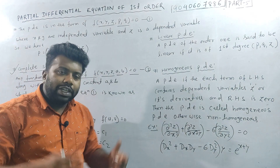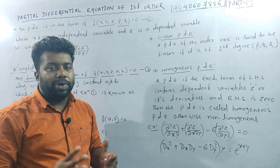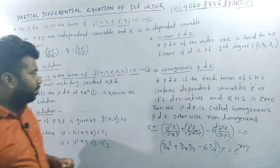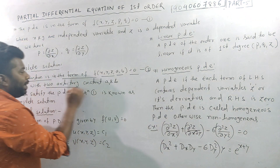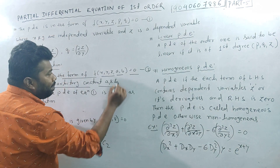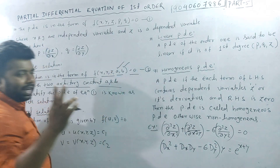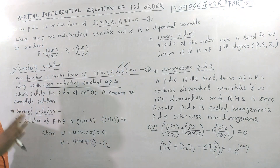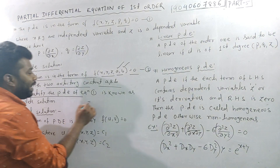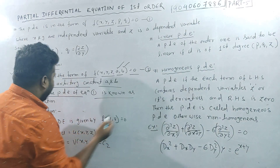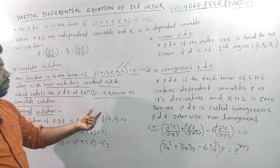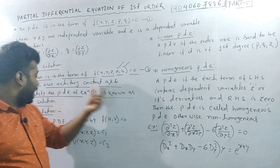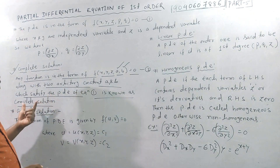The definition is important. We have two arbitrary constants, a and b. So a and b are arbitrary constants which satisfy the partial differential equation — equation 1. This is known as the complete solution.